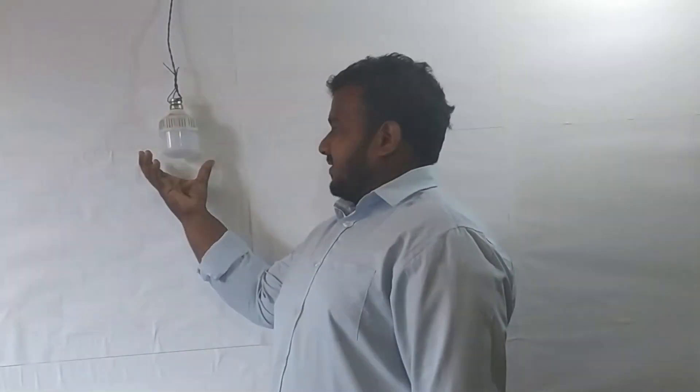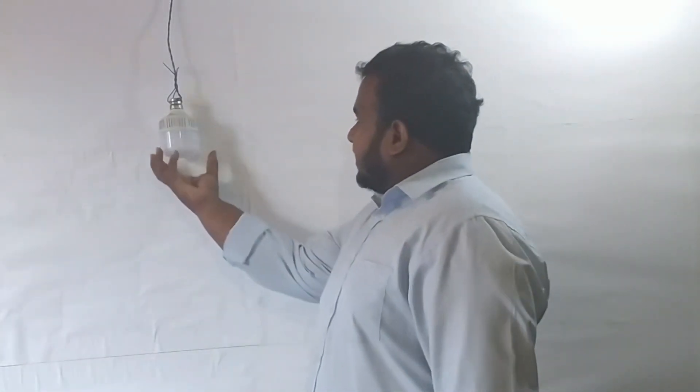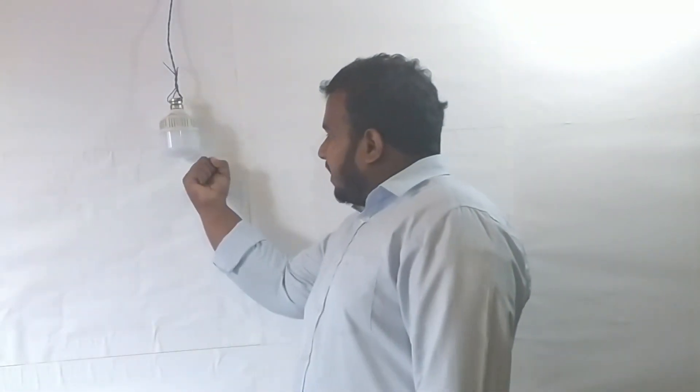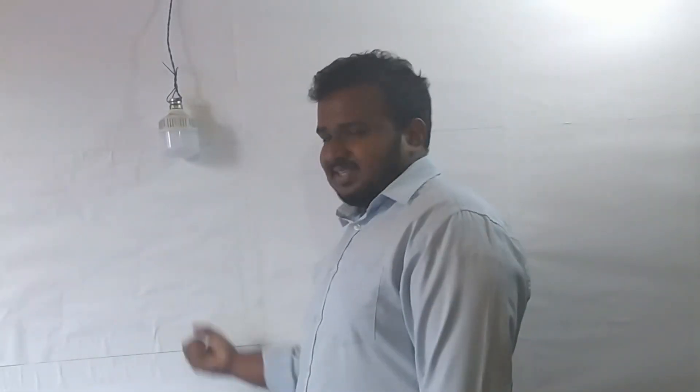So what are the forces acting here? The bulb has a weight. What happens is the bulb is pulled downward. Who is pulling the bulb downward? The force acting downward — we call it the weight. The weight is pulling downward.